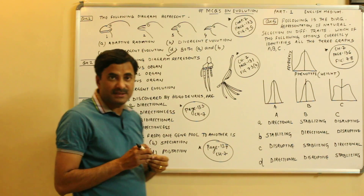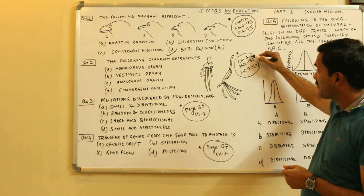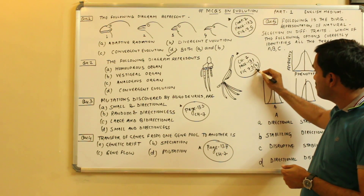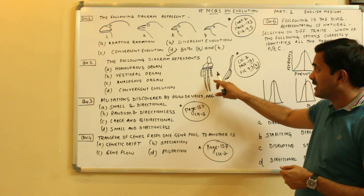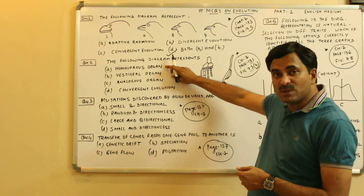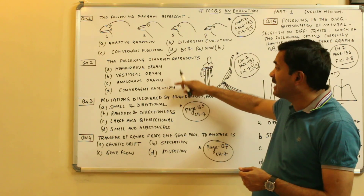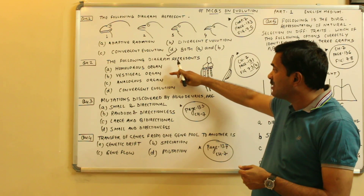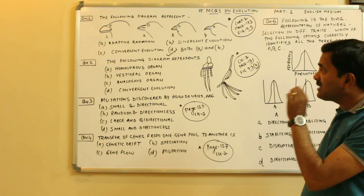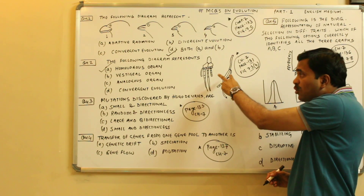The next question — the following diagram represents — is also from NCERT chapter 7 on evolution, page number 131, figure 7.3B. The question is: the following diagram represents a homologous organ, vestigial organ, analogous organ, or convergent evolution? The best answer is the homologous organ; this diagram is representing the homologous organ.